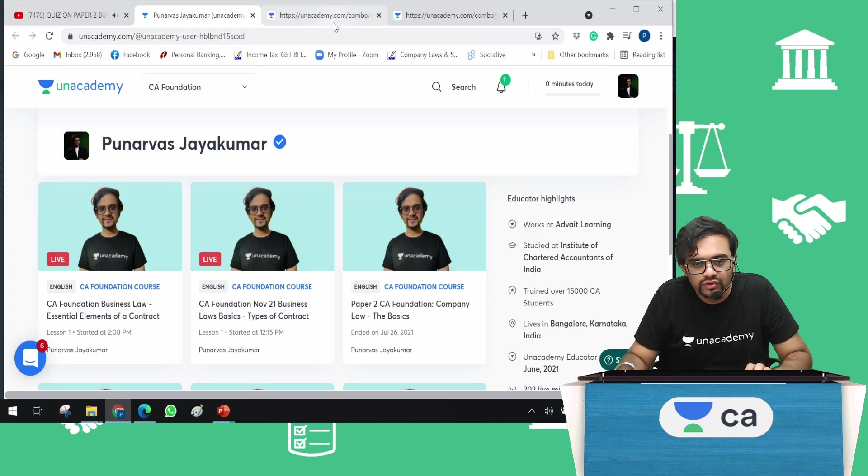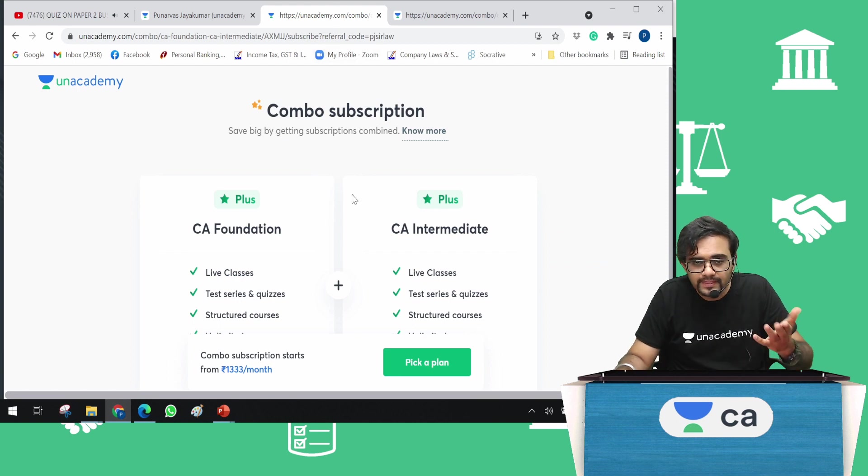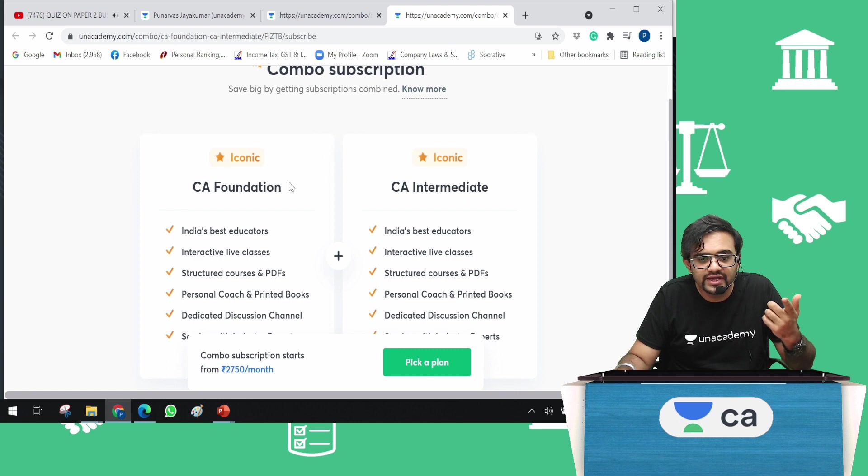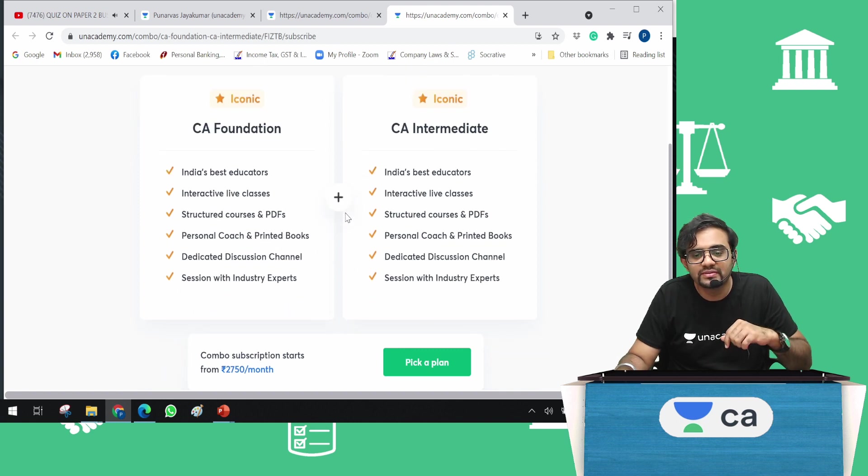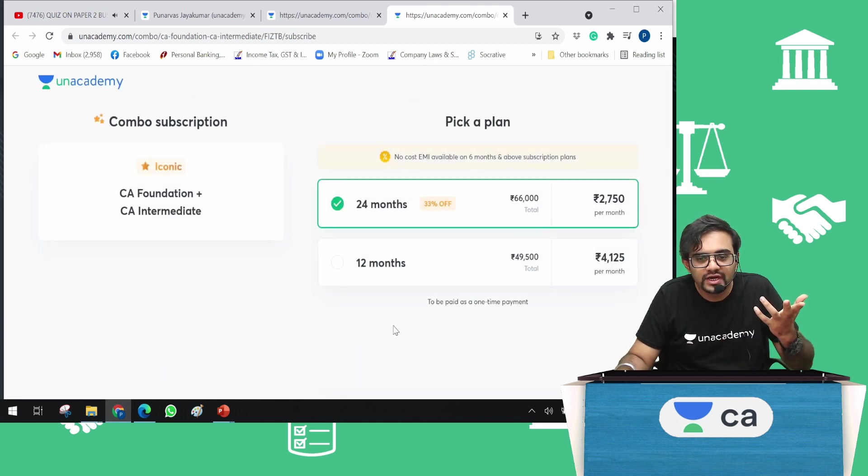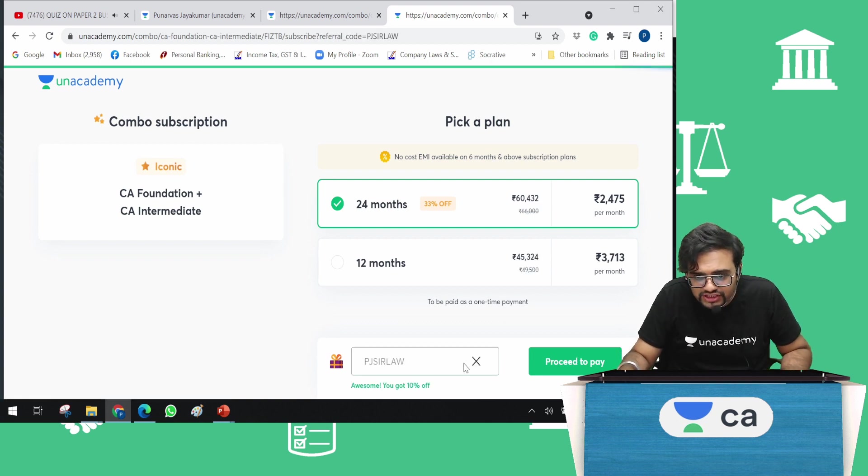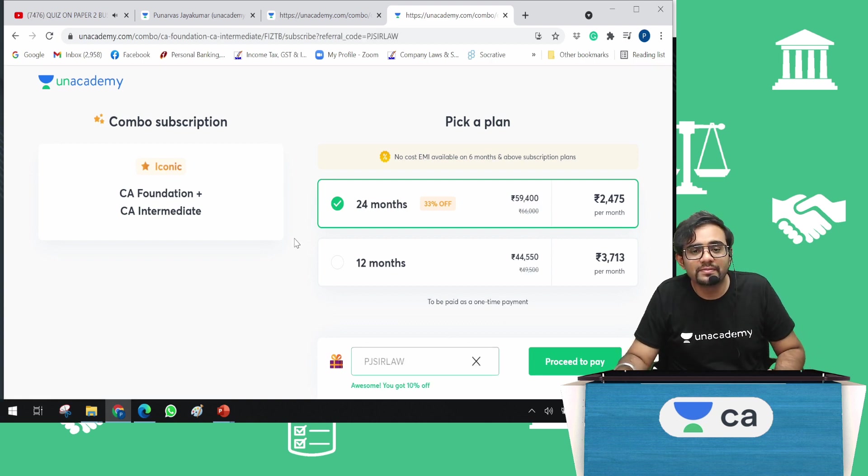Extremely simple. And also, if you see here, any combo subscription or intermediate plus, and we have the iconic for CA Foundation and intermediate, all you need to do is just pick a plan. And once you say pick a plan, in this referral code, all you need to do is PJSIRLAW. And magic! You will get 10% off. So, this is all you need to do. Very simple.